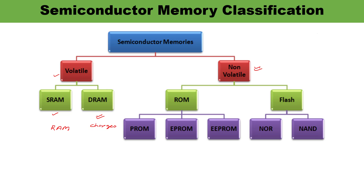Non-volatile memory is of two types: ROM and flash. ROM stands for read-only memory — data can only be read; we cannot write to ROM. The memory array is permanently programmed, and this programming is done by the manufacturer or programmer only once during manufacturing. The data cannot be changed or altered by the processor once it is programmed. There are various types of ROM.